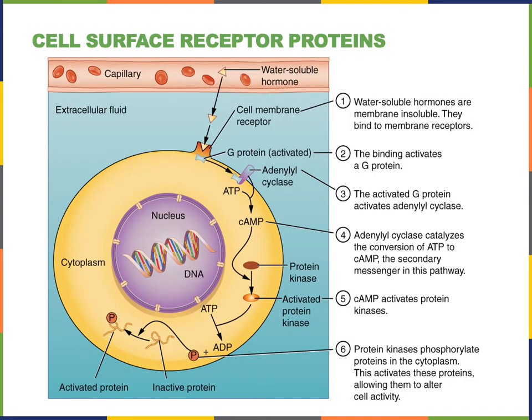A signal transduction pathway is a type of intracellular signal, which is a cascade of biochemical events occurring within a cell in order to regulate a cellular response following the activation of a receptor protein, which is usually a cell surface receptor. An intracellular receptor protein binds a lipid-soluble hormone, forming the receptor-hormone complex that can function directly as the intracellular signal and does not require a signal transduction pathway.